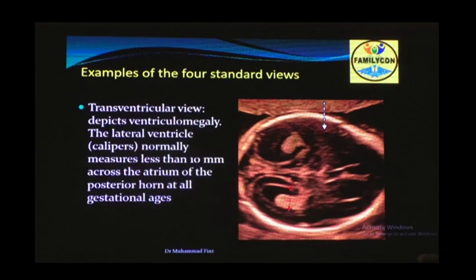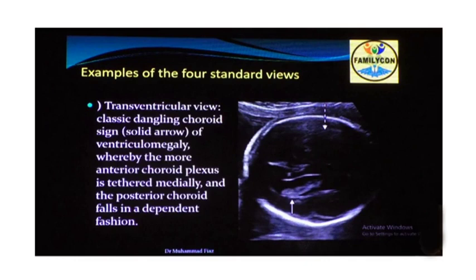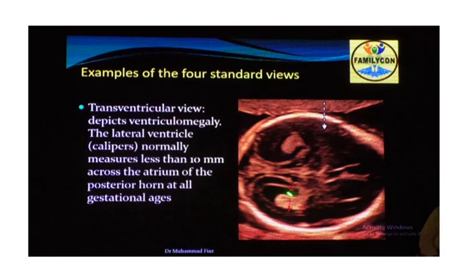The second view is the transventricular view, which depicts the ventricular system and allows assessment of the ventricles. Normally, ventricles are less than 10 mm and the choroid plexus is completely covered. For example, if the ventricle is more than 10 mm, it is dilated and the choroid plexus is dangling — normally, the choroid plexus must be fixed within the ventricle.